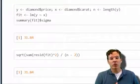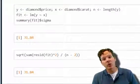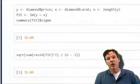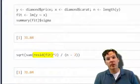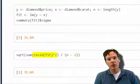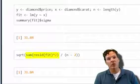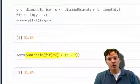So here, let's just confirm that I'm not lying to you and that the formula works. So if I do resid fit, that grabs the residuals. If I square it, it squares them. If I sum it, it adds up the squared values.